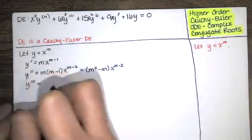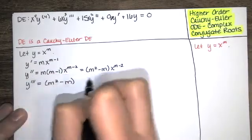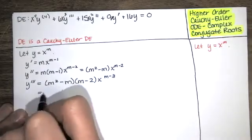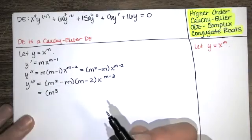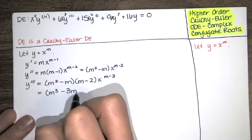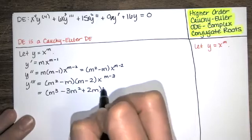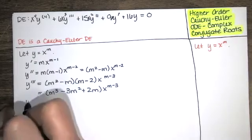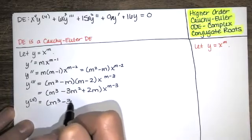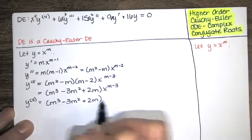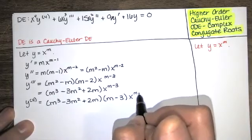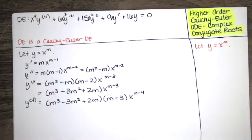Taking the third derivative, you do that again. First times first is m cubed, outer times outer is minus 2m squared, inner times inner is another minus m squared, so we've got negative 3m squared, and last times last is 2m. Then the fourth derivative — this is just a constant, so you bring it down, and then multiply by m minus 3, because you're bringing the power down and multiplying by x to the one less power.